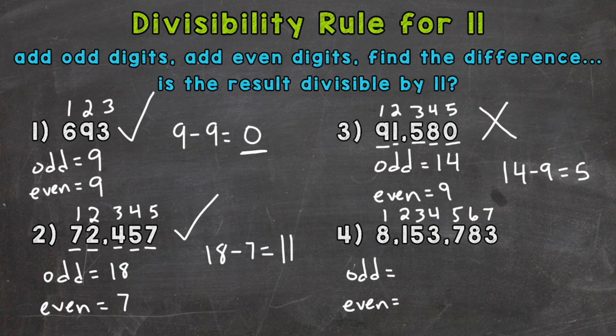So the odd, we have 8 plus 5 is 13, plus 7 is 20, plus 3 is 23. And the evens, we have 1 plus 3 is 4, plus 8 is going to give us 12. So we end up with 23 minus 12, which equals 11.